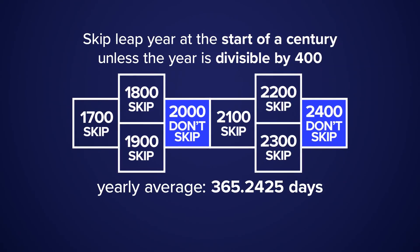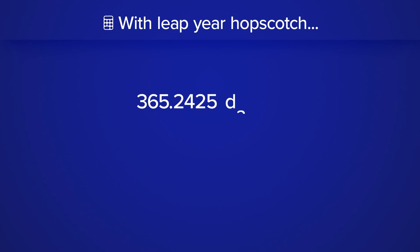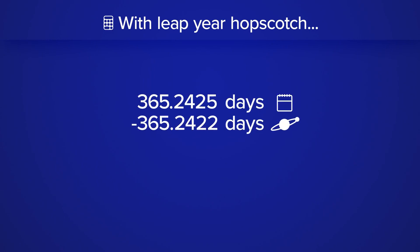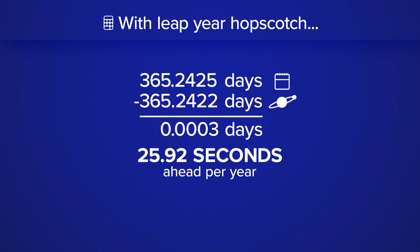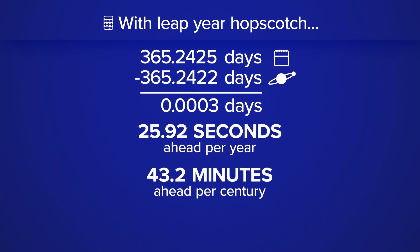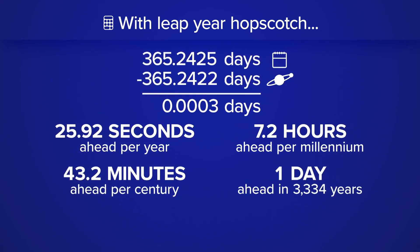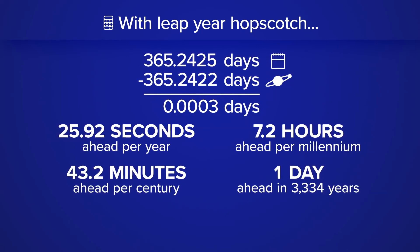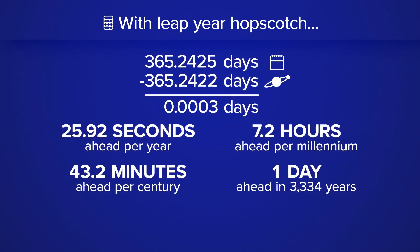With this added solution, the current yearly average is 365.2425 days, which is a lot closer to the solar year. Unfortunately we're still off by a few decimals — about 26 seconds a year. At this rate, it would take over 3,000 years to be off by one day, which some would say is close enough.